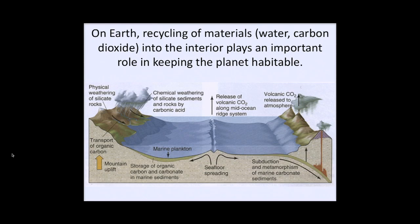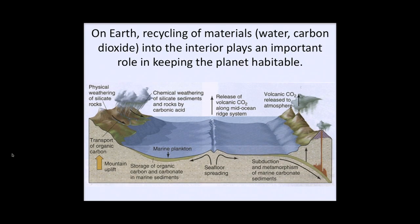That recycling of water and carbon dioxide is actually really important for the Earth over time and for what's happening at the Earth's surface, because it helps keep Earth habitable for a long period of time. On Venus, all the carbon dioxide has gone into the atmosphere, producing a runaway greenhouse effect making it completely uninhabitable, whereas the Earth has maintained a moderate climate for a very long period of time.